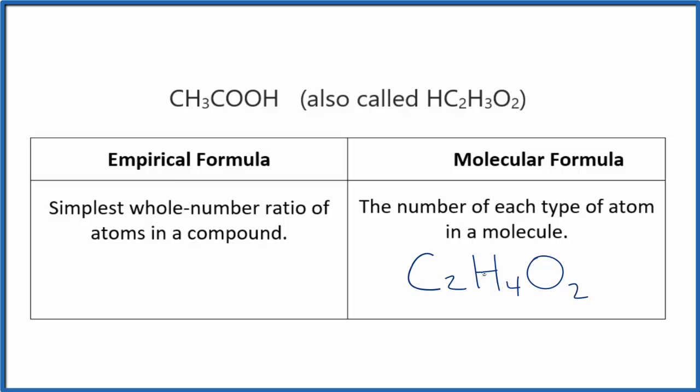So we want to get the ratio of the carbon, hydrogen, and oxygen atoms. If we divided each one of these numbers by two, since two is the lowest common denominator, we'd have one, two, one. We don't write the ones by convention though. That makes the empirical formula for acetic acid CH2O.